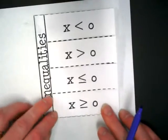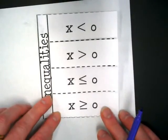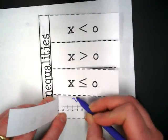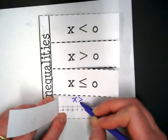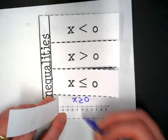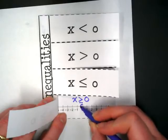And finally, x is greater than or equal to zero. So let's rewrite that. x is greater than or equal to zero. We're going to circle the zero.